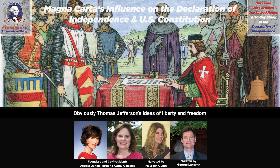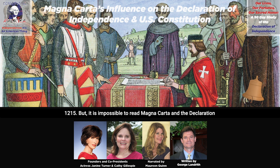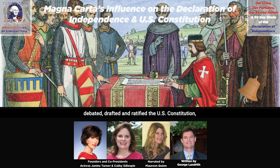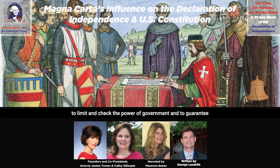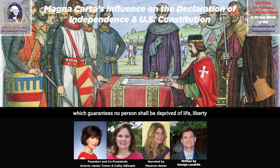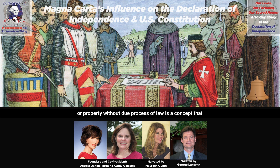Obviously, Thomas Jefferson's ideas of liberty and freedom had developed a great deal since Magna Carta was penned in 1215, but it is impossible to read Magna Carta and the Declaration of Independence and not see the common DNA. When the Founders debated, drafted, and ratified the U.S. Constitution, it is also clear they were creating a set of rules and procedures to limit and check the power of government and to guarantee basic individual rights. The Fifth Amendment to the Constitution, which guarantees no person shall be deprived of life, liberty, or property without due process of law, is a concept that comes from Magna Carta.